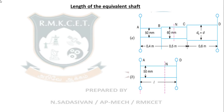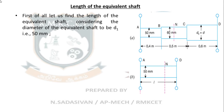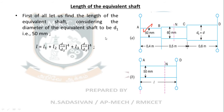First, convert this into an equivalent shaft. I am taking the first diameter D1 as the reference diameter of the equivalent shaft. You can choose any one diameter. If you choose D2 or D3 as the reference, the ratio terms in the equivalent length formula change accordingly — D3 by D3 would vanish if D3 is chosen.